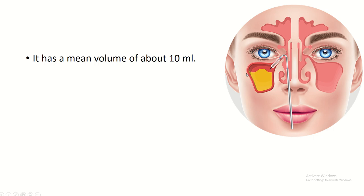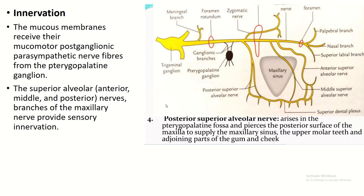The volume of the maxillary sinus is 10 ml. Regarding innervation: the mucous membrane receives vasomotor postganglionic parasympathetic nerve fibers from the pterygopalatine ganglion, which is attached to the maxillary nerve. The postganglionic fibers innervate the mucosa of the maxillary sinus. The superior alveolar nerves, branches of the maxillary nerve, provide sensory supply to the maxillary sinus.